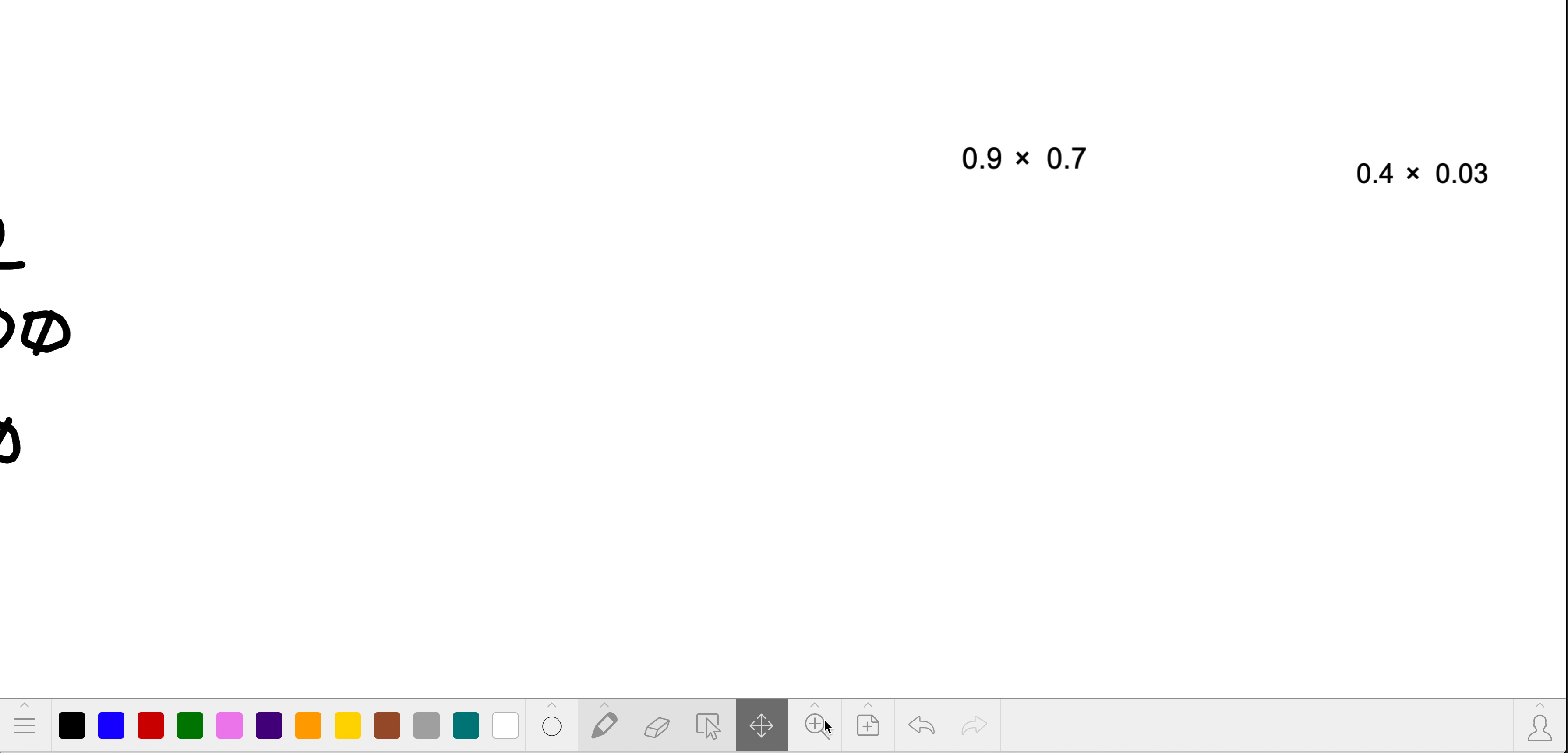Over here, we have 9 tenths times 7 tenths. So we're going to go through the same strategy. We're going to start with rewriting everything as fractions. Fractions are our friends. So we have 9 tenths times 7 tenths, and we get,